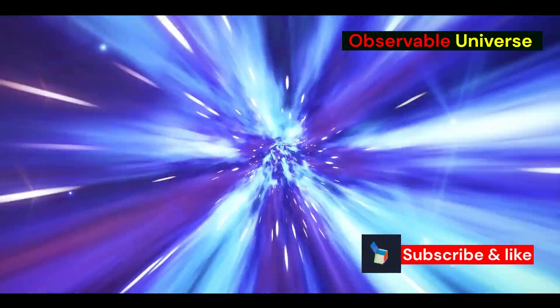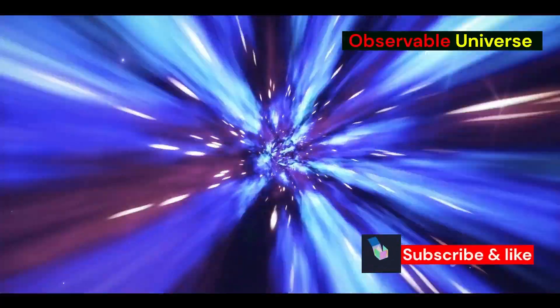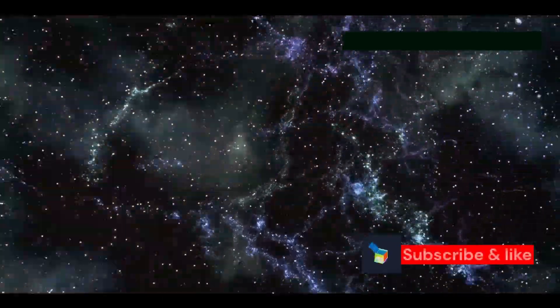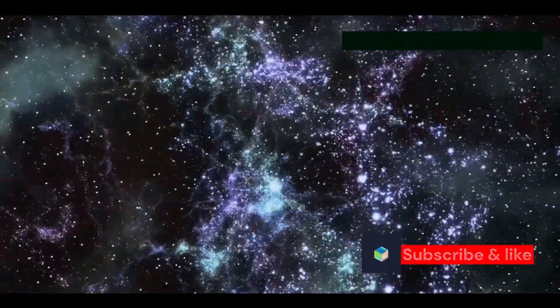But our vision is limited by the speed of light and the age of the universe. The vast distances and the finite speed at which light travels mean that there are regions of the cosmos we simply cannot see yet. Imagine a distant galaxy far beyond the observable universe. This galaxy exists, but its light has not reached us.